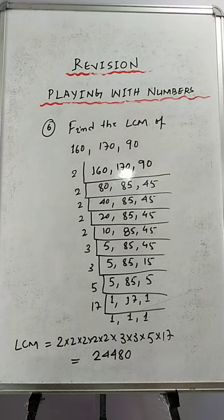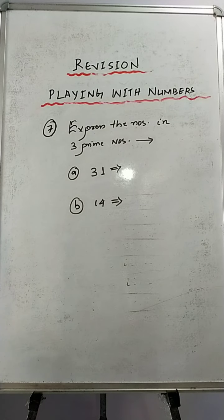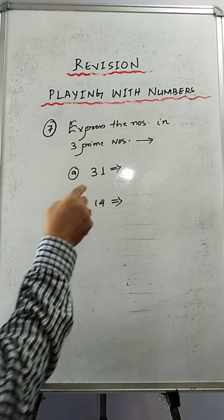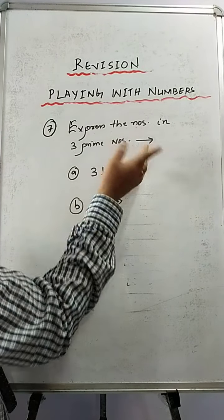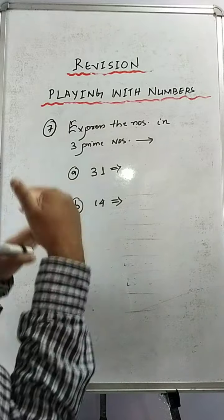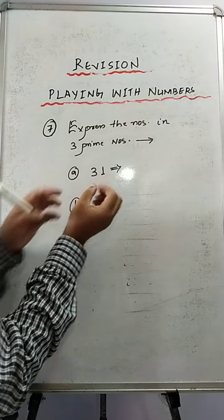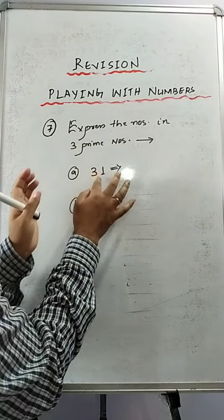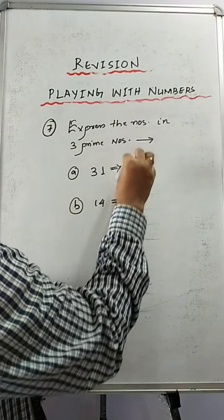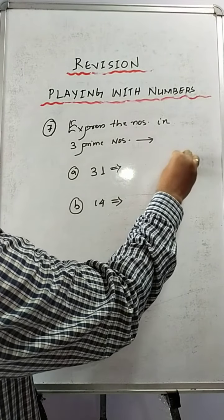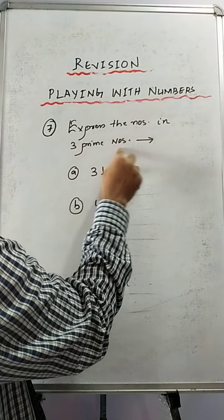This will carry 3 marks, this type of questions. Now let's move on to sum number 7. The next question is: express these two numbers as the sum of 3 prime numbers. That means we have to split this number into 3 numbers, and those 3 numbers would be prime numbers.